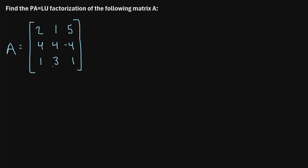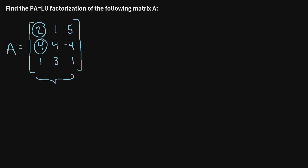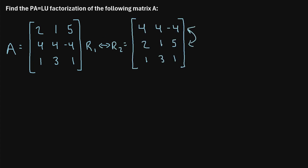The idea with this factorization method is that we want to convert matrix A to row echelon form, but we want to do so such that the value in the pivot position is always the largest value in the column. In the first column, we currently have a two in the pivot position, but the largest value is a four. So we swap rows one and two so that the four is in the pivot position.